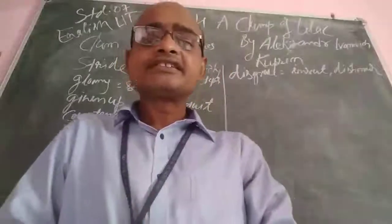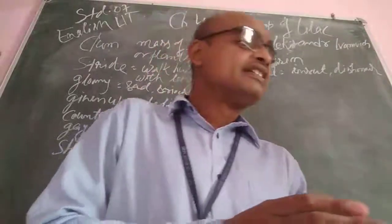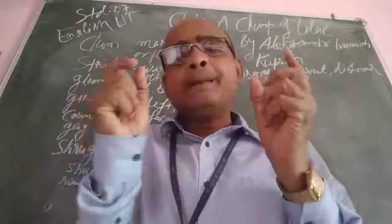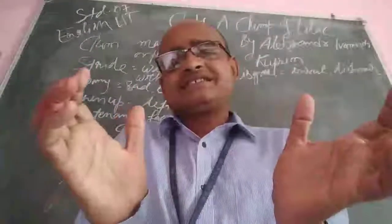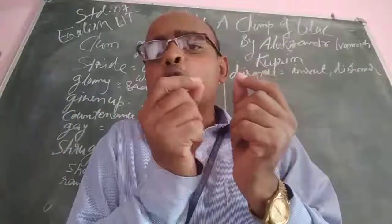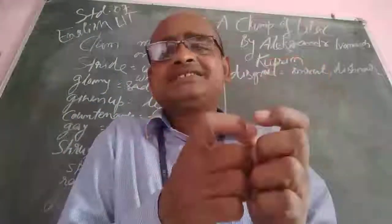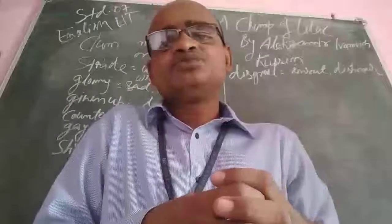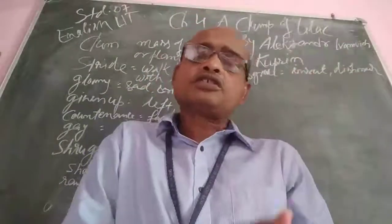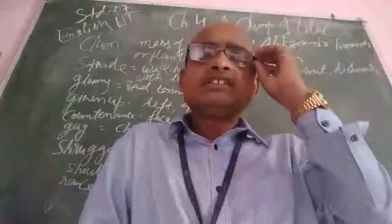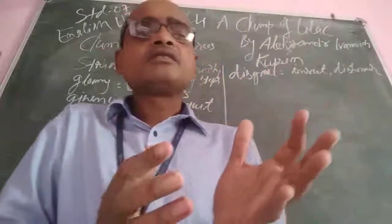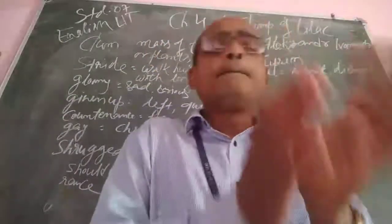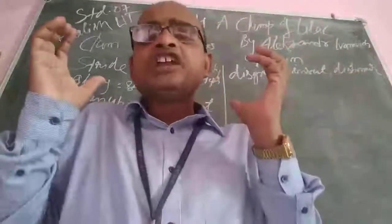Now let's begin this story — 'A Clump of Lilac.' Do you know 'clump'? Clump is a mass, a collection or group of plants or bushes that grow together. And lilac, of course, is a flower — a sweet-smelling white or purple flower. In this story, a clump of lilac plays a very important role.